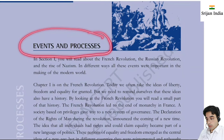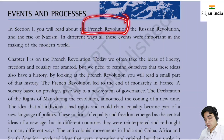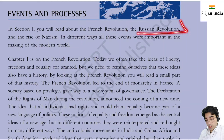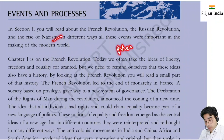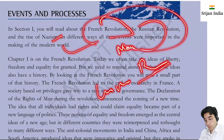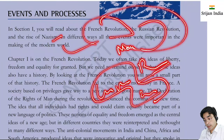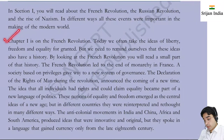Events and process - section one deals with the French Revolution, Russian Revolution, and the rise of Nazism. These three things have impacted world order in many ways. For example, the concepts of liberty, equality, fraternity that we see in Ambedkar sahab's work - these concepts came from the French Revolution. Chapter one is about the French Revolution.